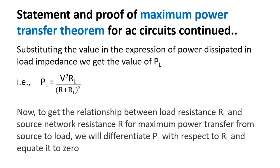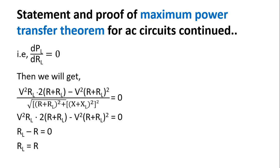Substituting this value into the expression of power dissipated in load impedance, we get PL equal to V squared times RL divided by (R plus RL) whole squared. Now, to get the relationship between load resistance RL and source network resistance R for maximum power transfer, we differentiate PL with respect to RL and equate it to zero. That is, dPL by dRL equals zero. By differentiating and simplifying the expressions, we arrive at RL equal to R — that is, the resistance of the load equals the resistance of the source.